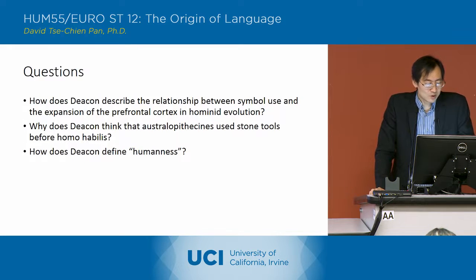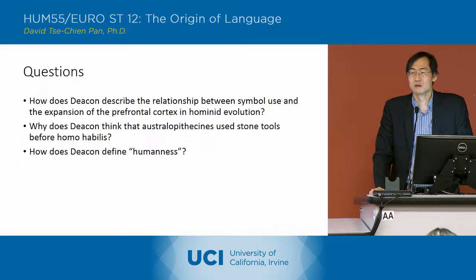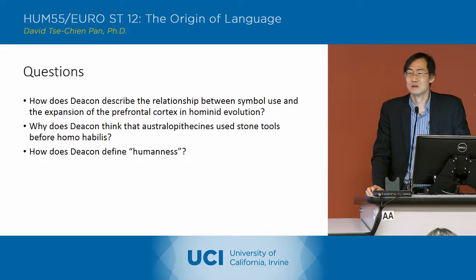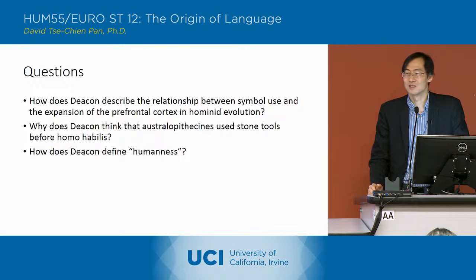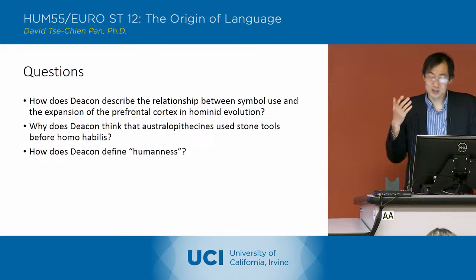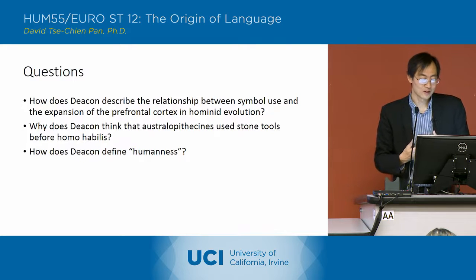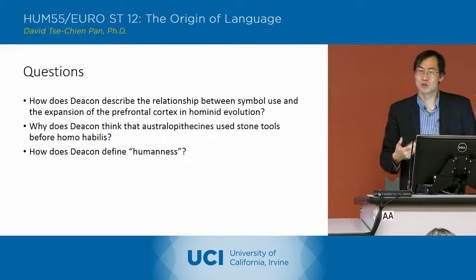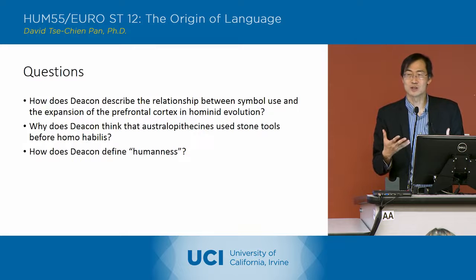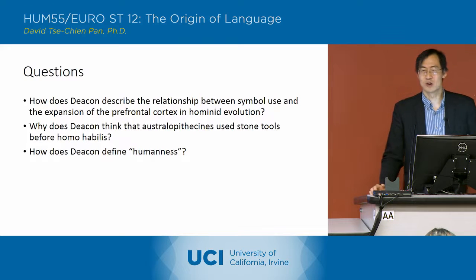How does Deakin describe the relationship between symbol use and the expansion of the prefrontal cortex in hominid evolution? Lauren answers: symbol use comes before the expansion of the prefrontal cortex, before changes in brain structure to support that symbol use. He's indicating that australopithecines, if they were equivalent to chimpanzees, already had that ability, even though they couldn't use it very well.